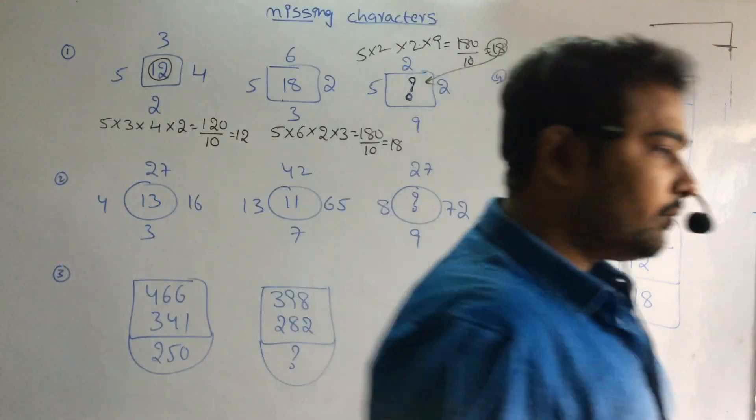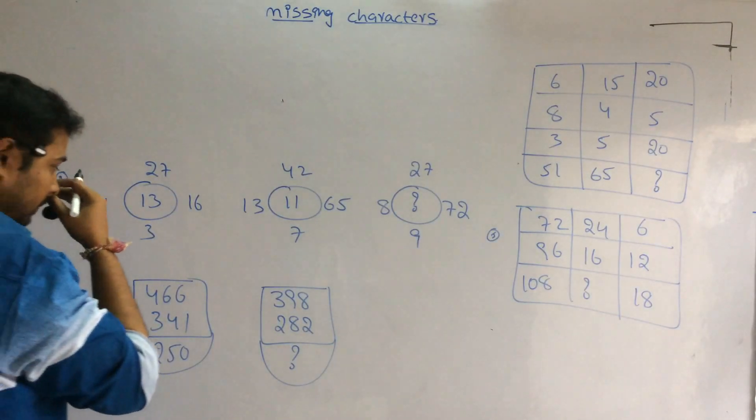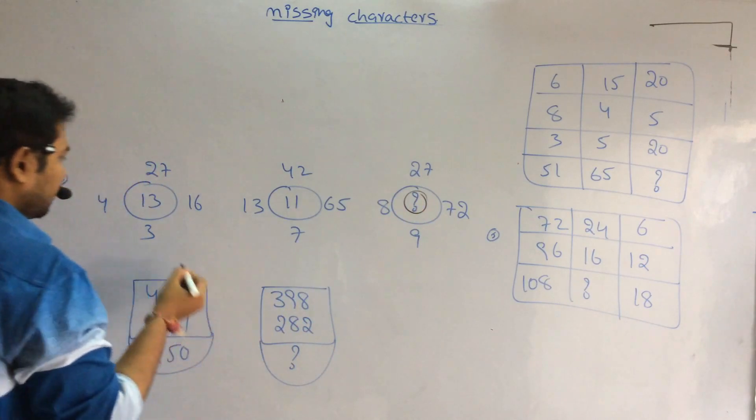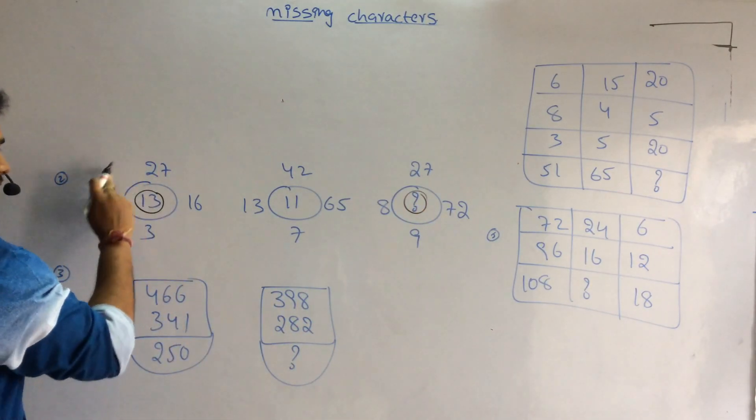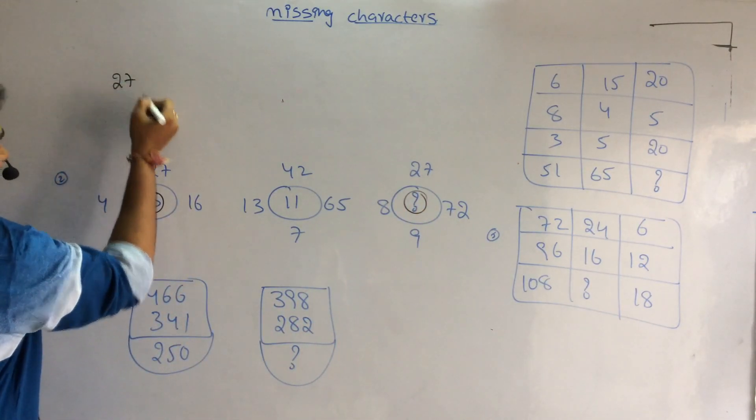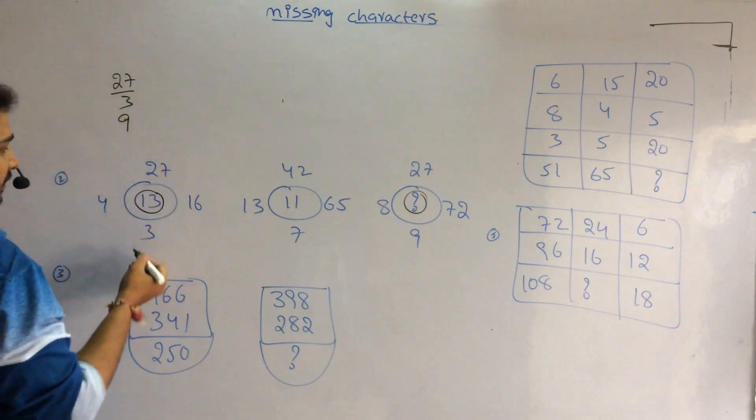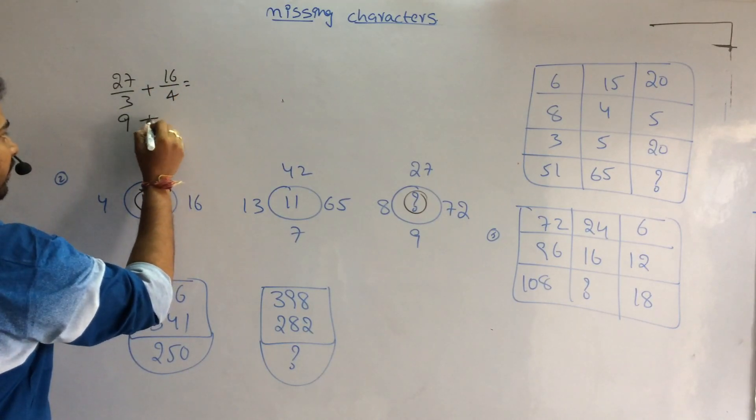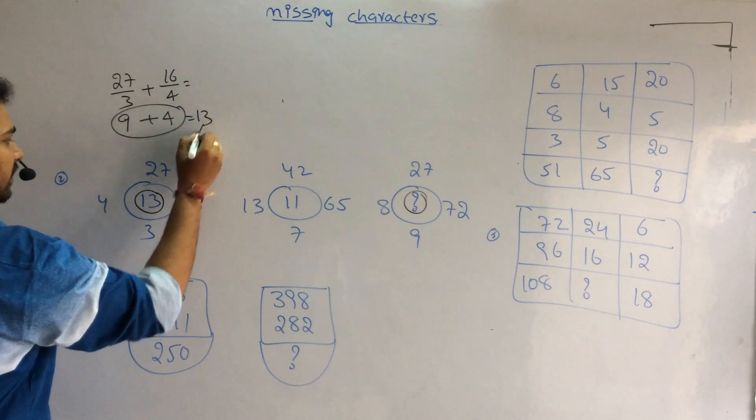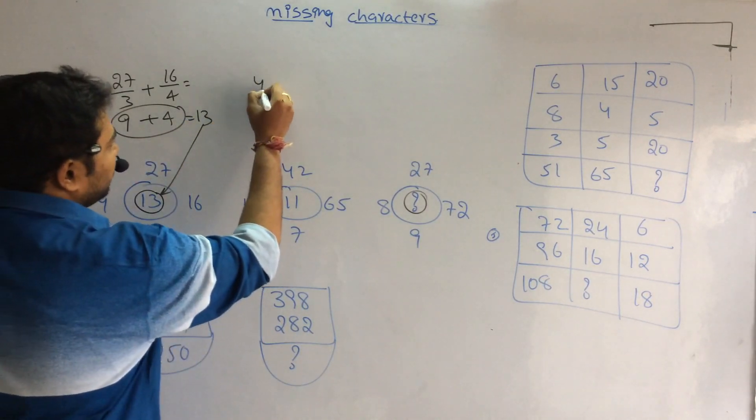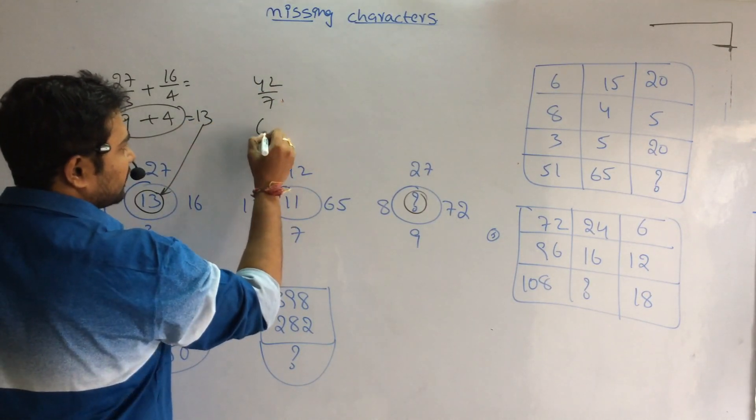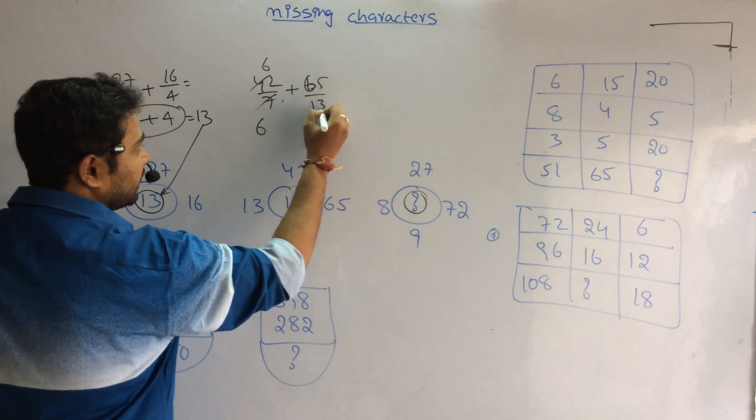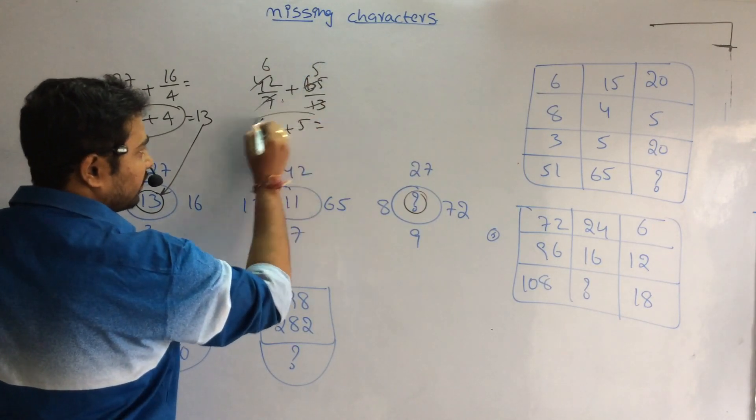Next, second one. I need to find the value here. How did 13 come from using these numbers? 27 divided by 3 is 9, plus 16 divided by 4 is 4. Sum of these numbers is 13. Likewise, 42 divided by 7 is 6, plus 65 divided by 13 is 5. That equals the sum of these numbers.